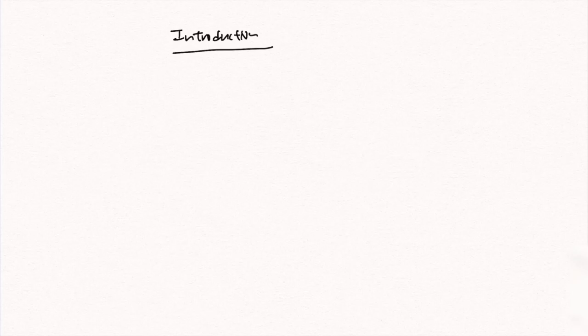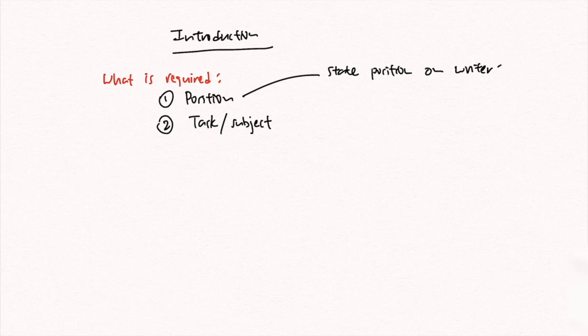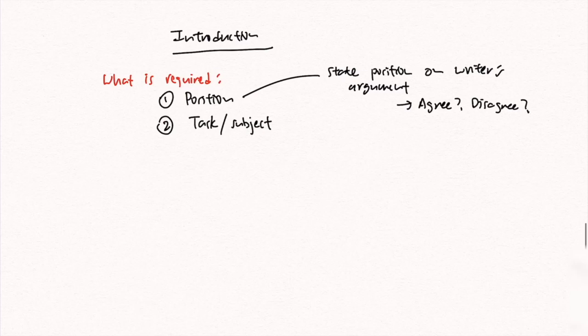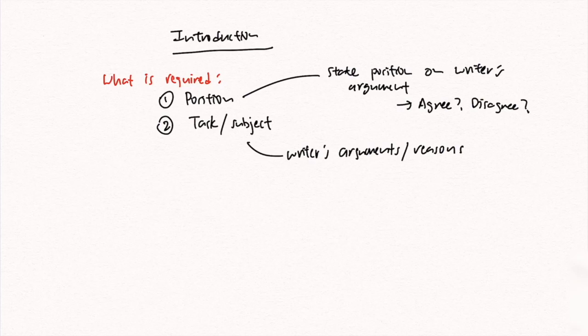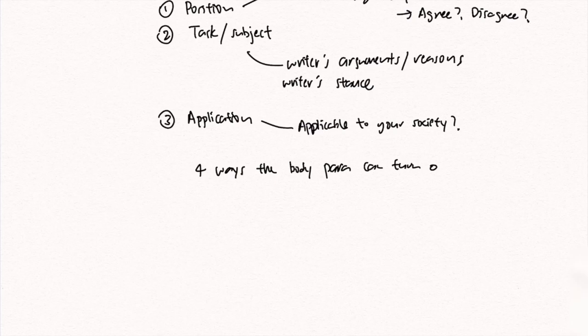Now I'll go through how we can write an introduction. What is required is basically our position and also the task or subject. For position, we state our stance on the writer's arguments — whether we agree or disagree with them. By task or subject, I am referring to talking about the writer's arguments, reasons, or stance. The third thing we need to briefly mention is whether these issues are applicable to Singapore society.